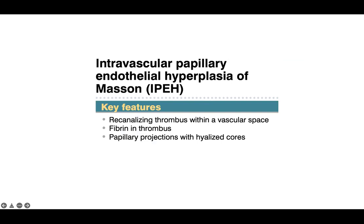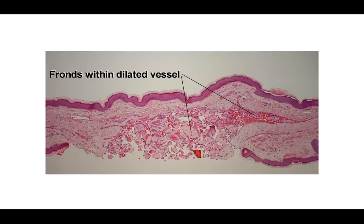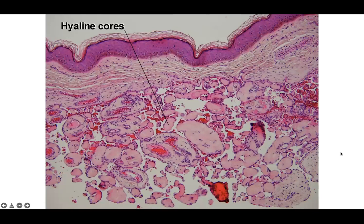Masson's tumor, also known as IPEH (intravascular papillary endothelial hyperplasia), has key features of a recanalizing thrombus within a vascular space, fibrin within the thrombus, and papillary projections with hyalinized cores. Here's an example showing the intraluminal papillary architecture — fronds within a dilated vessel with hyalinized cores. Take a mental snapshot of this. Look for those hyalinized cores and fronds in and out of the plane of section, along with bland endothelial cells inside a larger vessel, with an overlying normal dermis and epidermis.